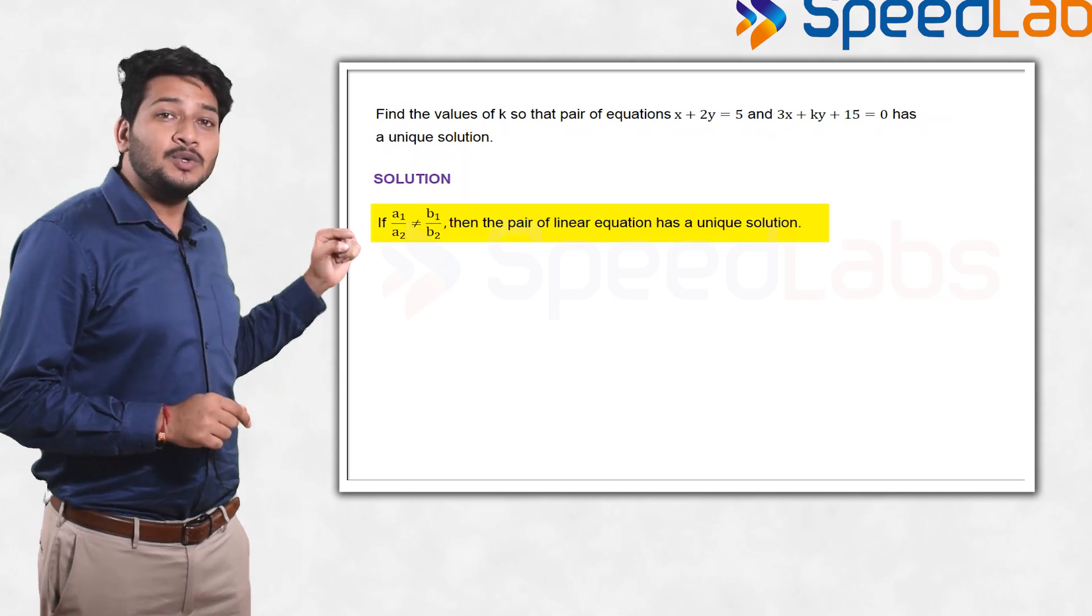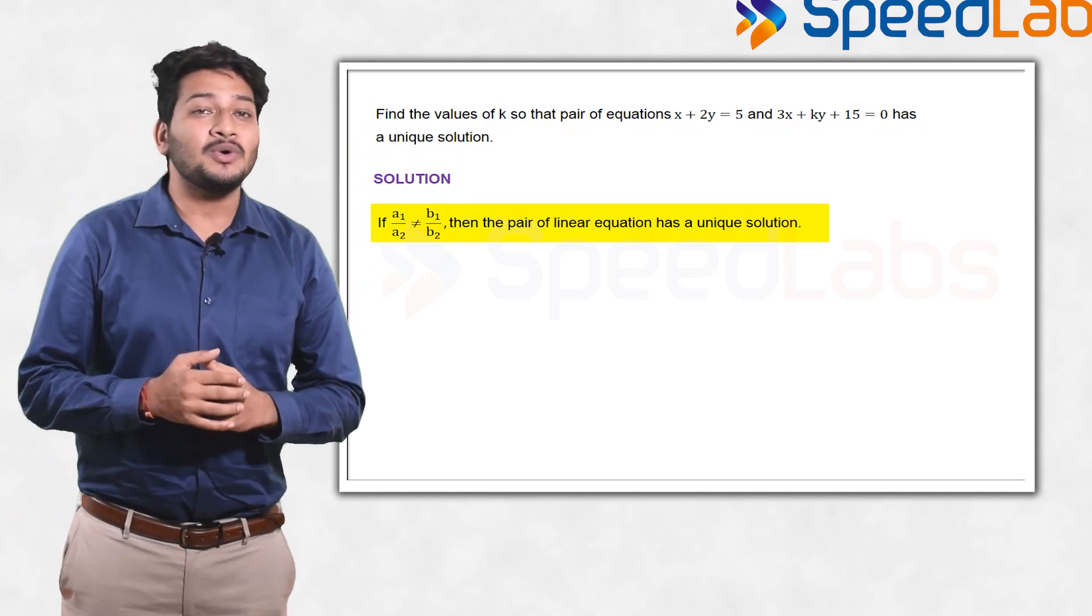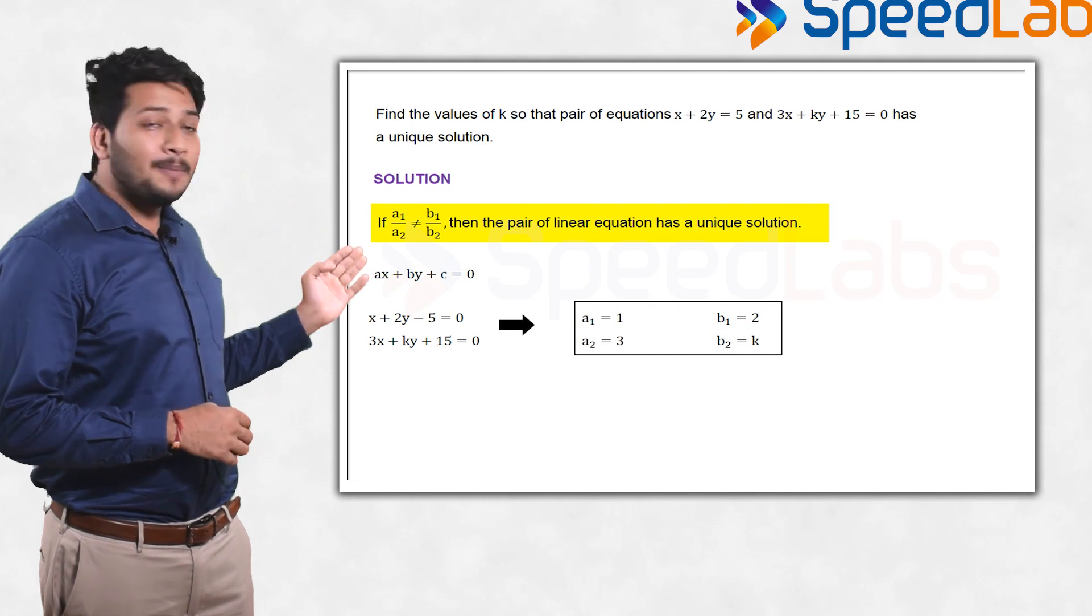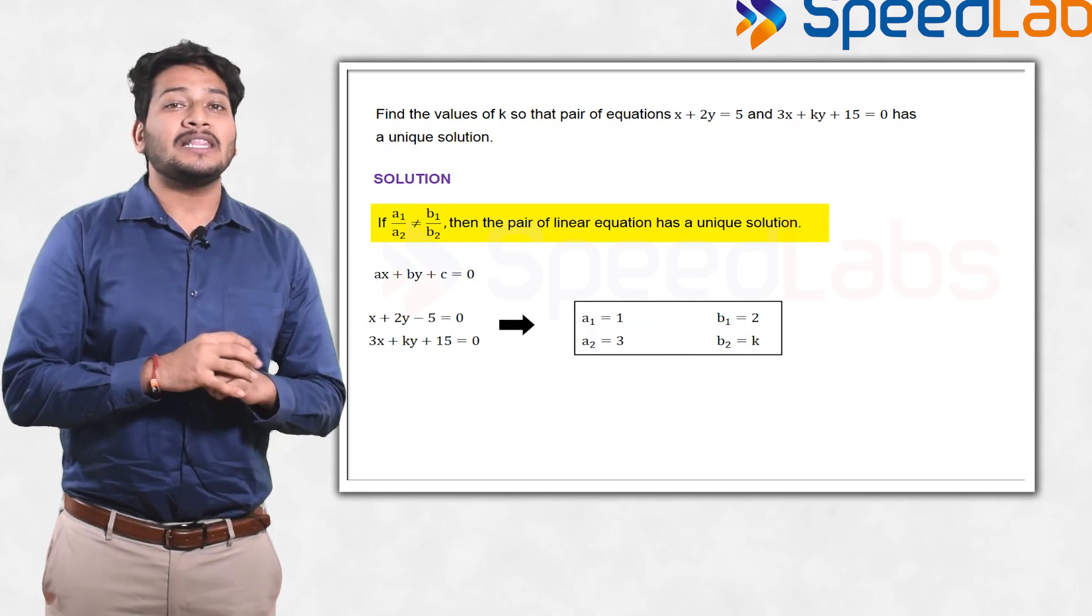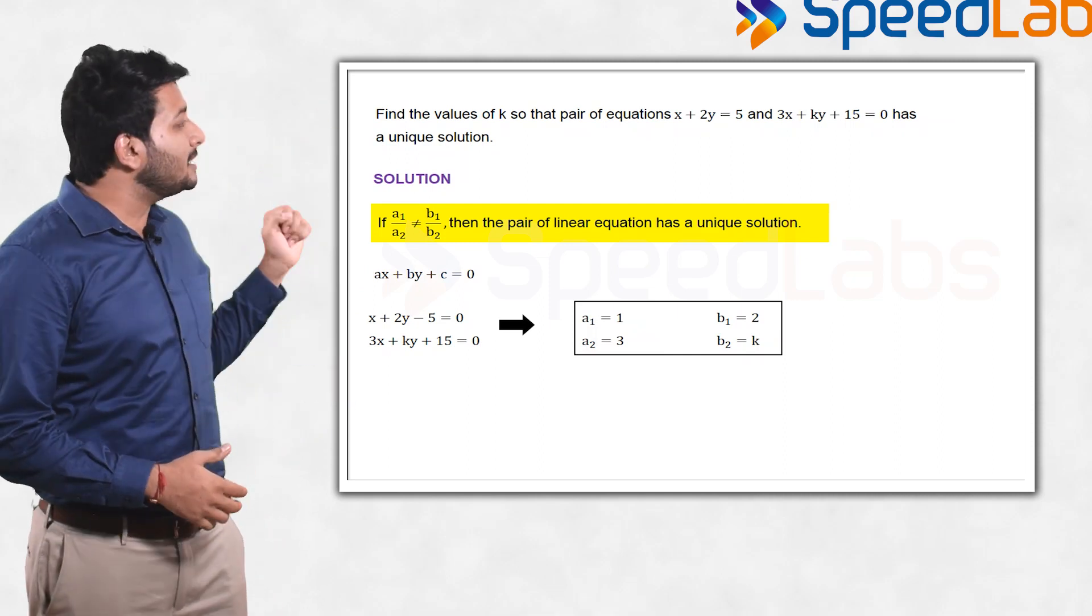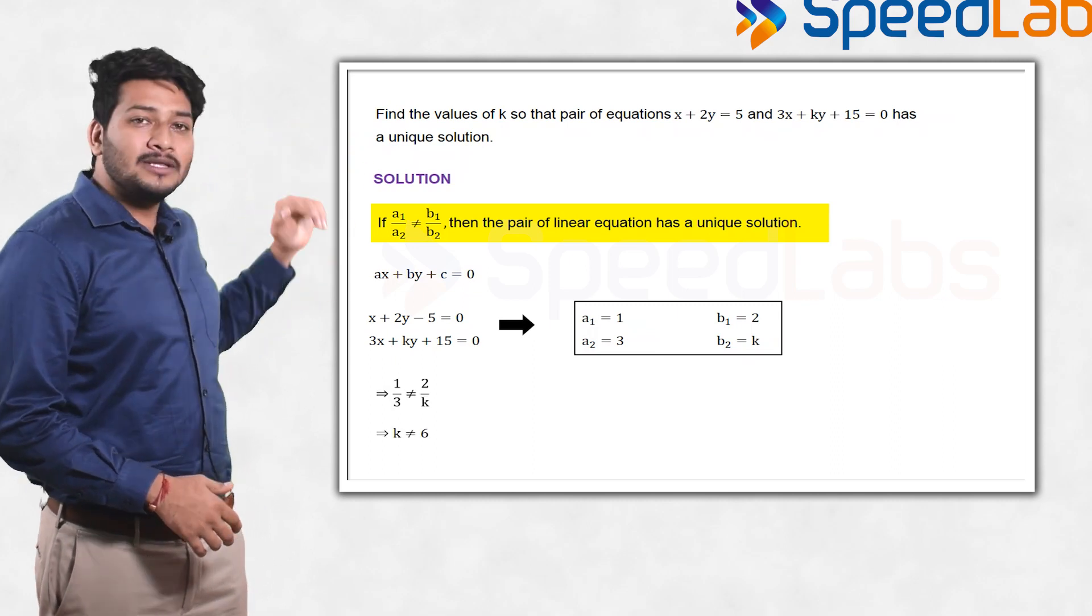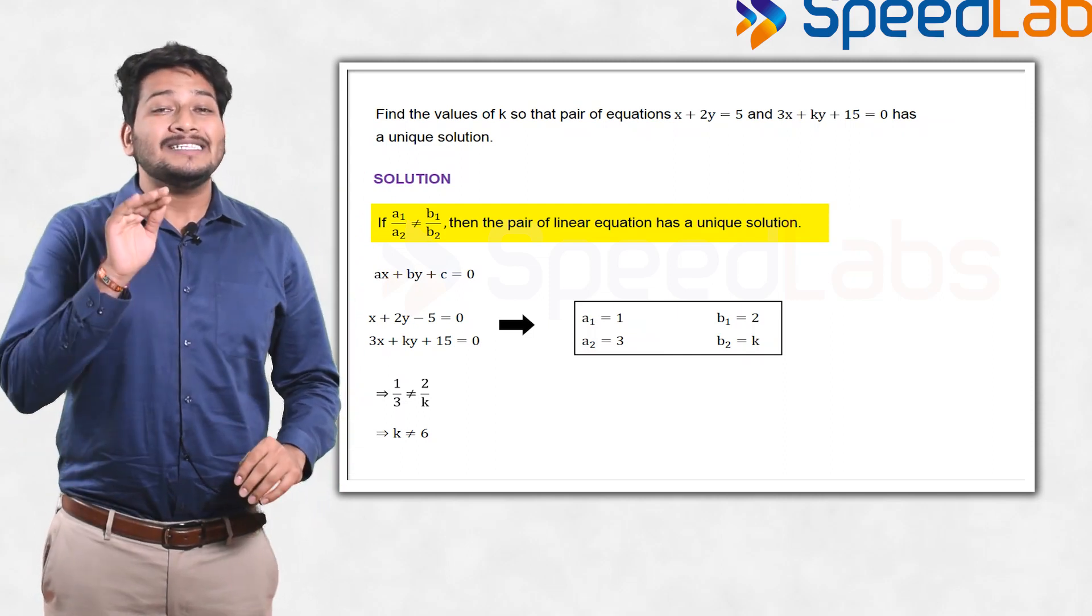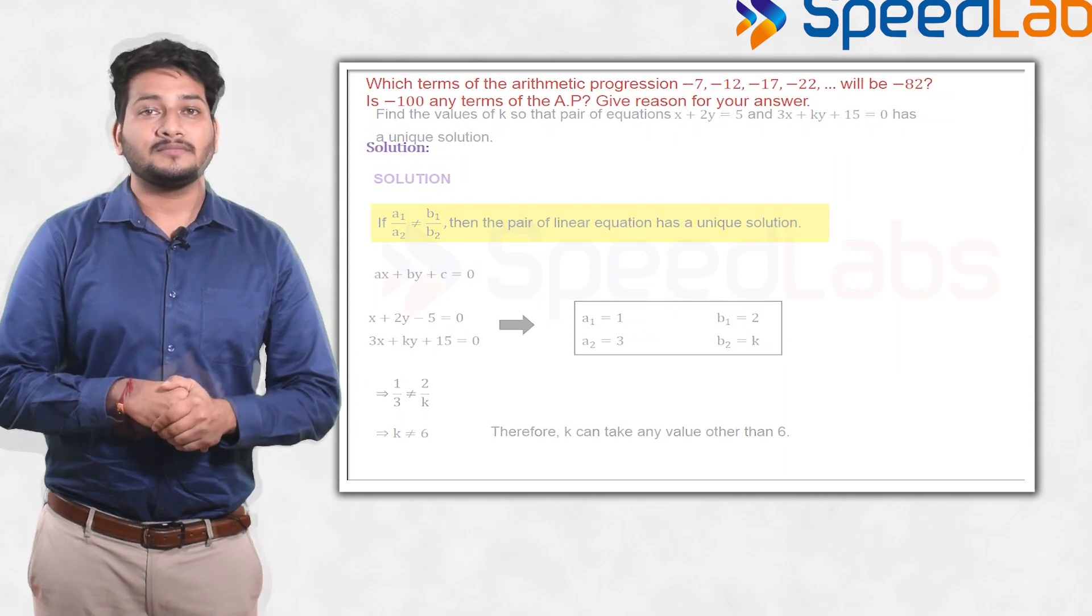Compare both given equations with ax + by + c. You will get the values: a₁ is 1, a₂ is 3, b₁ will be 2, and b₂ will be k. You have to find the value of k for which these equations have a unique solution. Let us use the property that a₁/a₂ should not be equal to b₁/b₂. So 1/3 should not be equal to 2/k, which means k should not be equal to 6. So k can take any value other than 6.